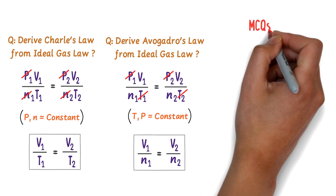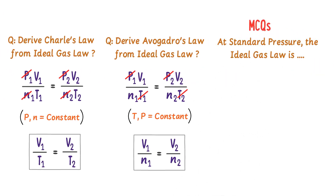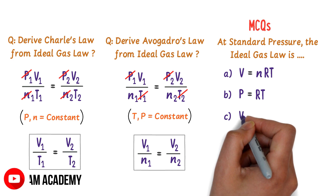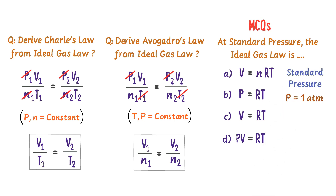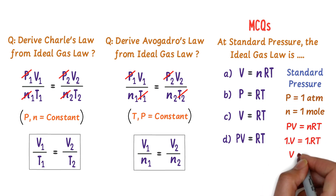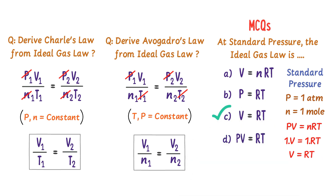Here is a personal MCQ: at standard pressure, which form does the ideal gas equation take? Options: V = NRT, P = RT, V = RT, or PV = RT. At standard pressure, P = 1 atmosphere and N = 1 mole. Starting from PV = NRT and substituting these values gives V = RT. The correct option is C: V = RT. Note down these important concepts of the ideal gas law.